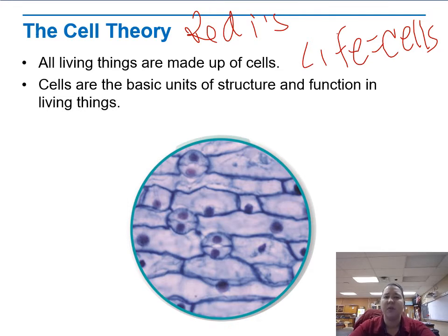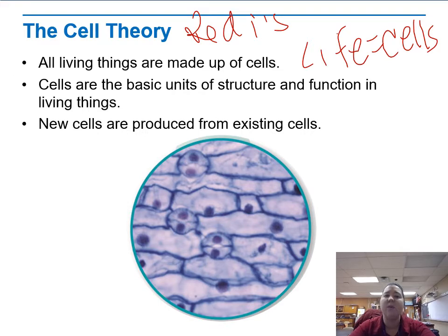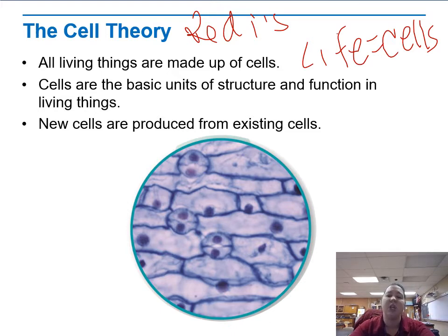Cells are the basic units of structure and function in living things. Whether we're talking about unicellular or multicellular things, cells are the basic unit. And new cells are produced from existing cells — you can't just snap your fingers and get a new cell. They have to come from somewhere. This was a huge thing when it came to understanding life and reproduction, because we had to figure out the original cell that created the rest of them.